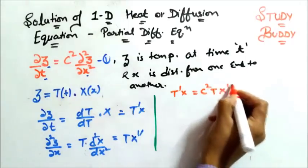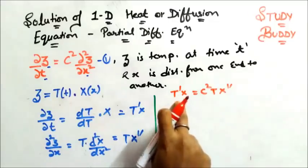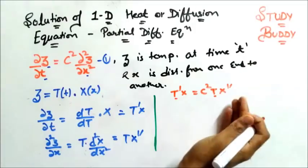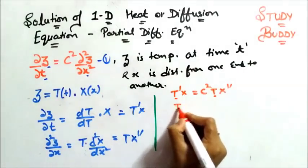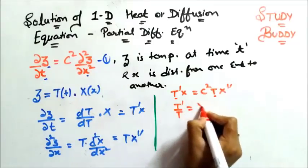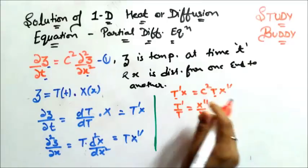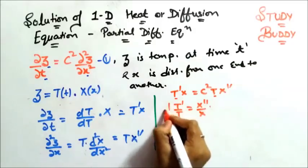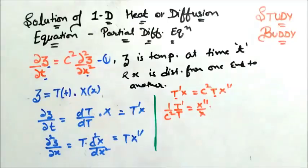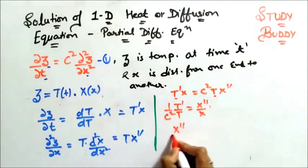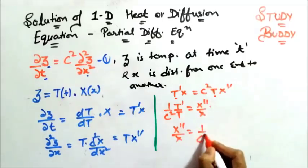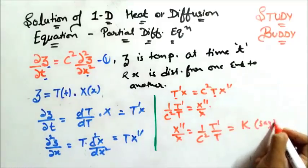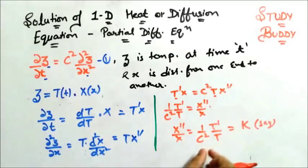Dividing through, the equation becomes: one over C squared times T-dash over T equals X-double-dash over X. According to the method of separation of variables, all like variables must be kept on one side. We set both sides equal to a constant K, giving us: one over C squared times T-dash over T equals X-double-dash over X equals K.